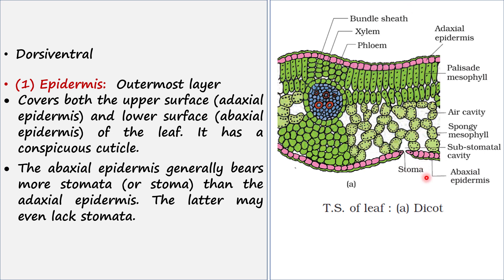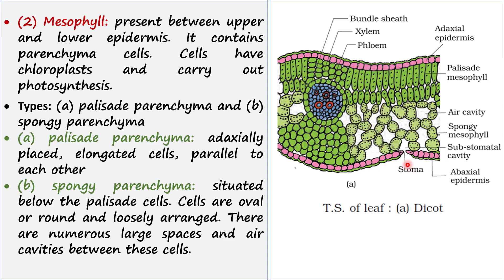The abaxial epidermis generally bears stomata, but you will not find many stomata on the adaxial surface. Sometimes you may find a few, and sometimes none at all on the adaxial epidermis, but stomata are always found on the abaxial epidermis.